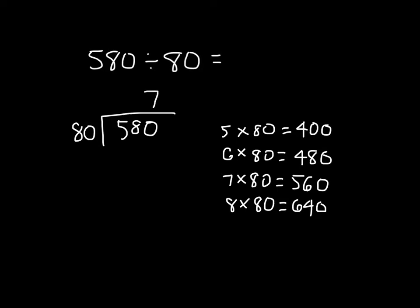So we know that this goes in 7 whole times. Notice again, we're putting it into the ones place there. 7 times 80, we already have that over here as 560. 580 minus 560 is 20, and 20 is our remainder. It cannot be divided anymore by that divisor of 80.